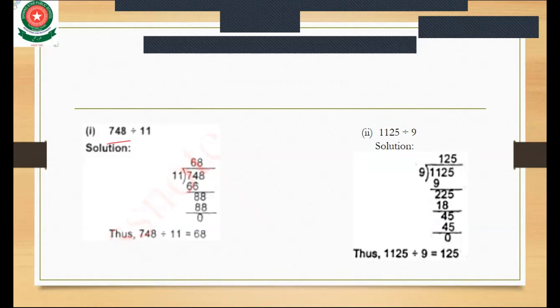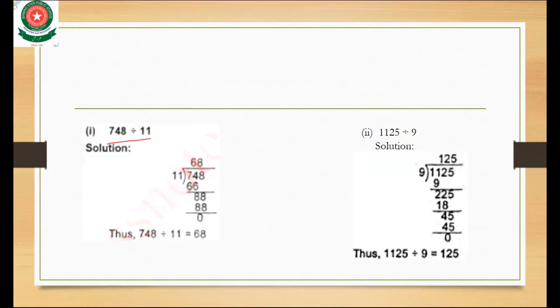Let me see part 1 again. The question is 748 divided by 11. We take 748 and place it inside the bracket, and 11 outside.